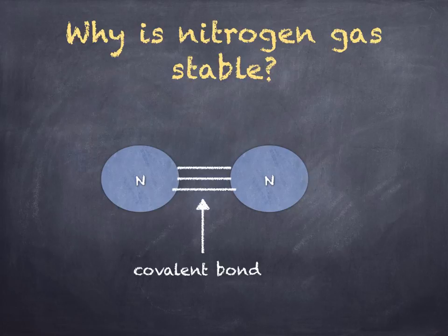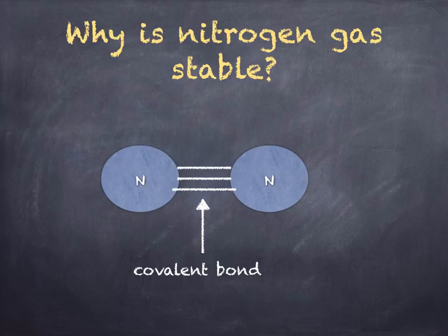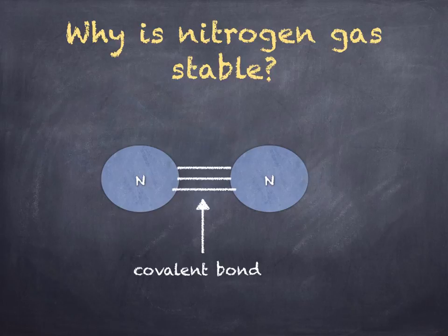With each breath that you take, you're taking in about 350 cubic centimeters of nitrogen gas, but this is completely useless to you — it simply passes in and out of your body unchanged. It's the same for plants: they take in nitrogen gas through their stomata, but they cannot use it because the gas is unreactive. So before nitrogen can be used by living organisms, it needs to be changed from nitrogen gas into some reactive form.